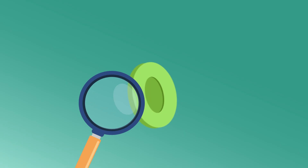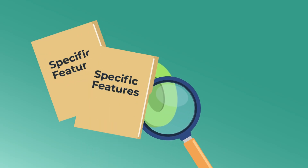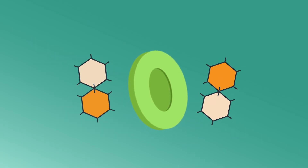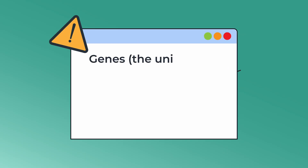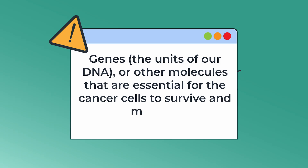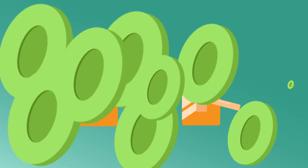Scientists have discovered that cancer cells often have specific features that drive their growth. These features can be called targets. These targets can be proteins that stay on the inside or outside of the cell, genes which are the units of our DNA, or other molecules that are essential for the cancer cells to survive and multiply. Imagine these targets as unique locks on the cancer cell. Once cancer happens, these locks open, leaving no obstacles for cancer to grow.